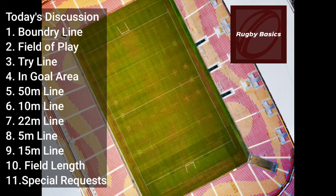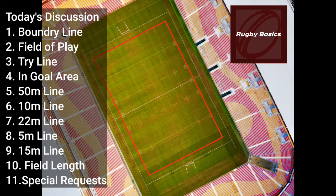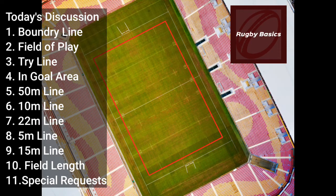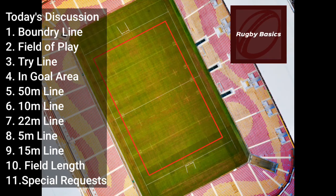The next line is the five-meter line. This box I've created here is also called the scrum zone. If the game was stopped outside of this box but still in play — say by a knock-on or a forward pass — then the scrum has to be moved into the scrum zone in order for a scrum to take place.